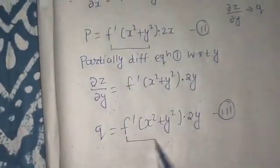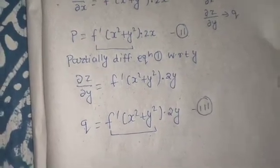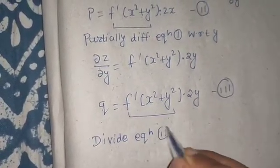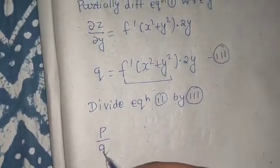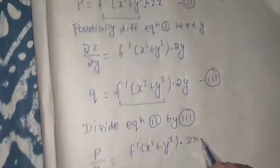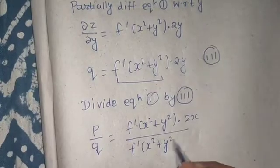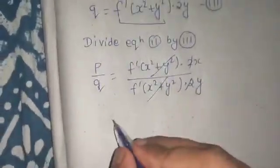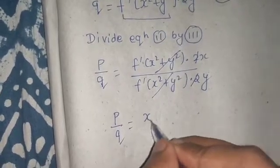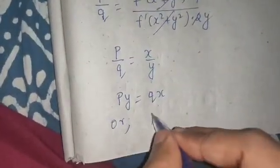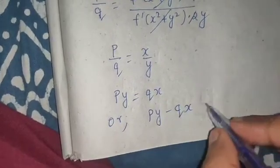Looking at equations two and three, f dash(x² + y²) is common in both. So if I divide equation two by equation three, I get p by q equals f dash(x² + y²) times 2x over f dash(x² + y²) times 2y. The f dash terms cancel, and the 2s cancel, giving p by q equals x by y. Cross-multiplying: py equals qx, or py minus qx equals zero.